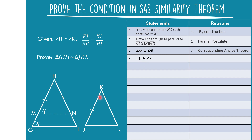Statement four: Angle H is congruent to angle H by reflexive property. With these two pairs of congruent angles, we can say that triangle MHN is similar to triangle GHI by AA Similarity.